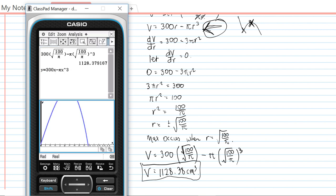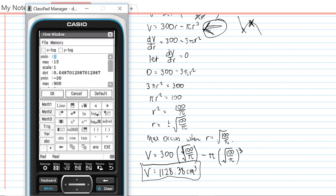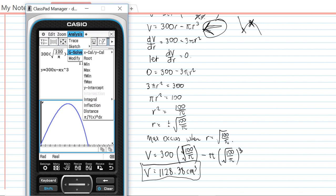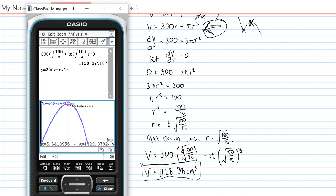So we can see that right there. If I just make my max go up to 1200, then I can find out by going analysis, g solve max, that the x-coordinate is 5.64, which apparently is the square root of 100 on π, and the y-coordinate is 1128.38.